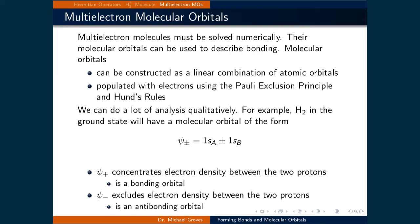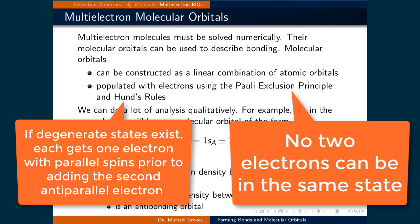The molecular orbital solutions to the Schrodinger equation can be used to describe bonding. Similar to the H2 plus case, molecular orbitals can be constructed from a linear combination of atomic orbitals, which are then populated with electrons using the Pauli exclusion principle and Hund's rules.